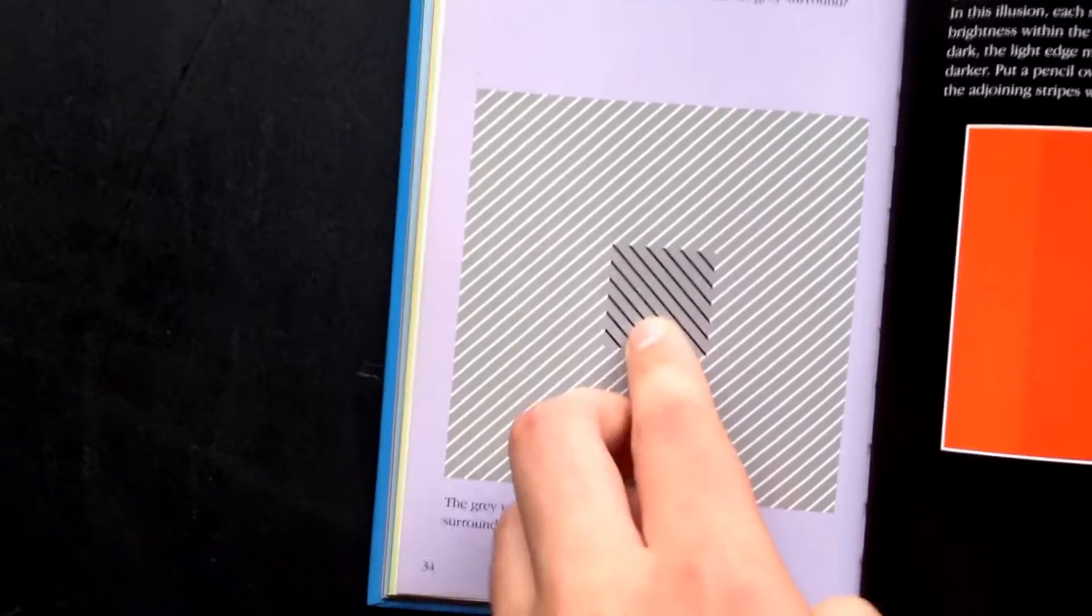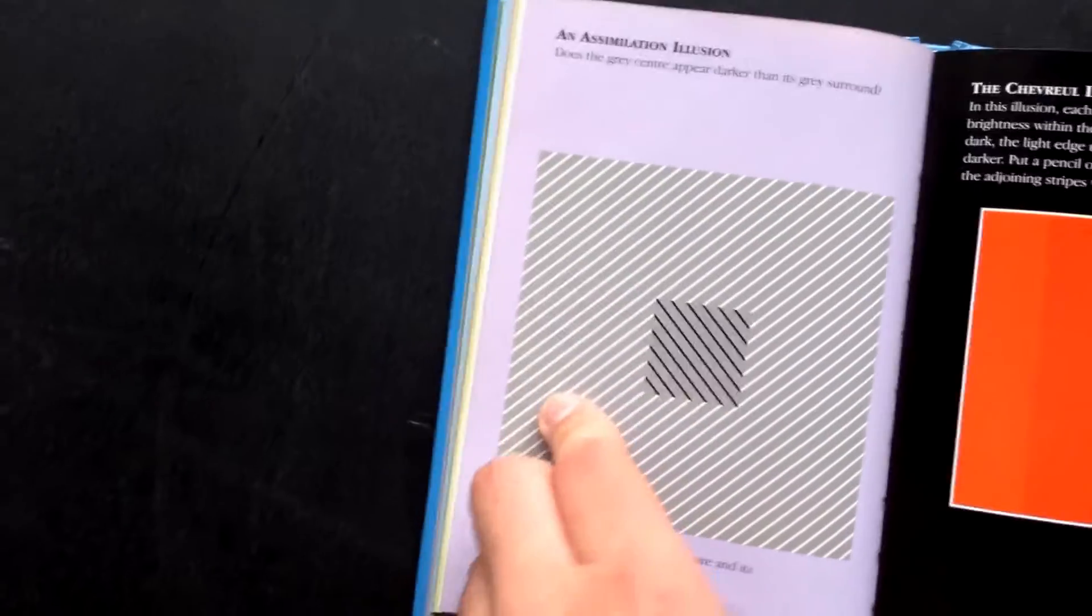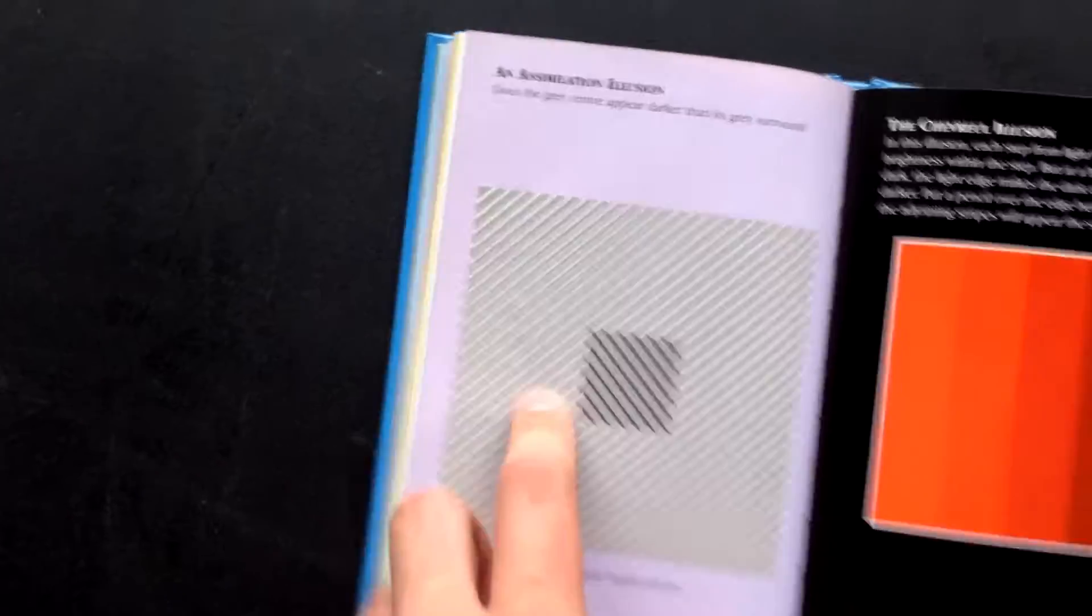Here, with the dark lines, this grey looks darker and this grey looks lighter, but they're actually the same grey.